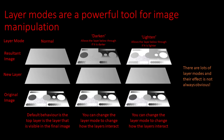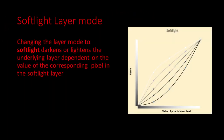The layer mode we are going to use is called Soft Light, and it requires a bit of explanation. It is supposed to mimic soft lighting conditions, so let's delve into what this layer mode does as it plays an important part in our process.